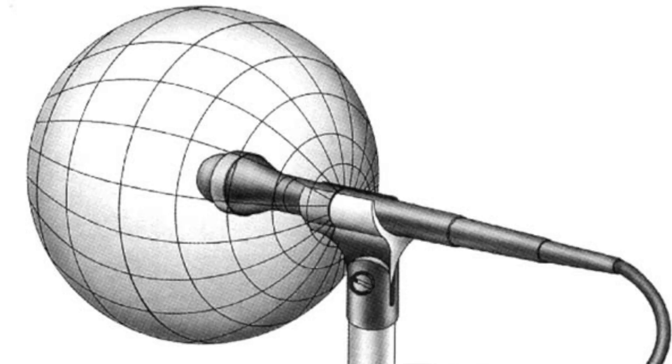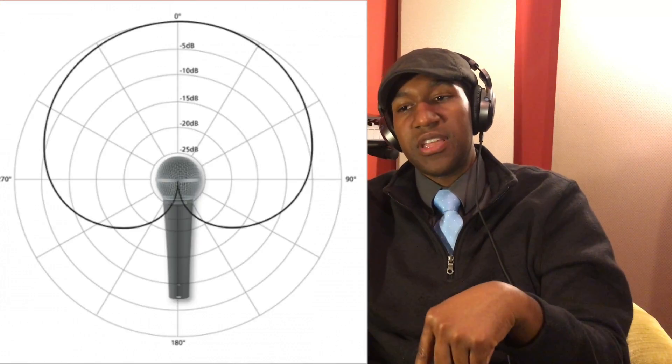Now there may be a little bit of a difference in sound from behind the microphone, and that's simply because the higher frequencies probably can't penetrate the back of the microphone as easily as if they were coming from the side where the microphone is facing. But for the most part, there is no discrimination on where sound gets picked up with an omnidirectional microphone.